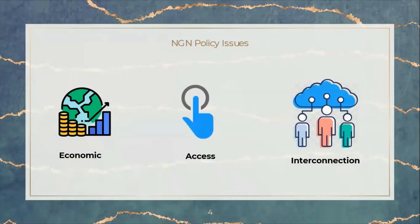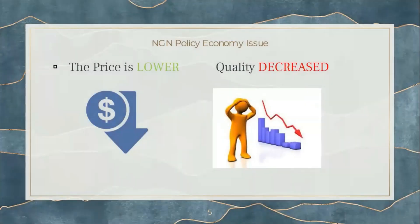There are some issues in NGN policy which can be divided into three. The first is economic, the second is access, and the third is interconnection. For the NGN policy issue in economy, the price is lower, but as the price is lower, the quality is decreased.